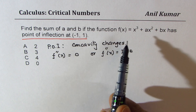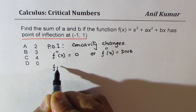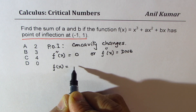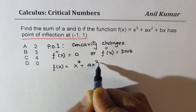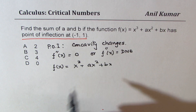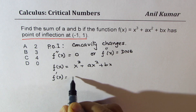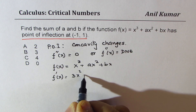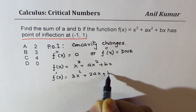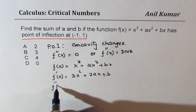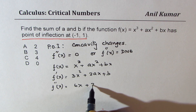We are given the equation f(x) equals x cubed plus ax squared plus bx. Let's find the second derivative. The first derivative is 3x squared plus 2ax plus b, and the second derivative is 6x plus 2a.